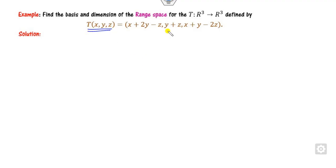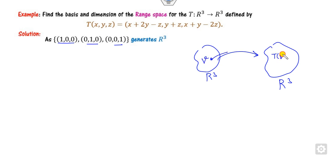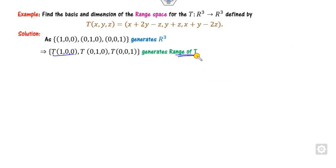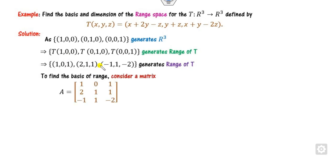Now look at Case 2: when the transformation is given and you have to find the range space. Since the domain is R3, start from the standard basis. Apply T to each basis vector: for T(1,0,0), substituting x=1, y=0, z=0 gives (1, 0, 1). Similarly compute the images of the other basis vectors. Construct a matrix A whose rows are these image vectors, then convert it to row echelon form. Apply row operations R2 → R2 − 2R1 and R3 → R3 + R1, then R3 → R3 − R2.